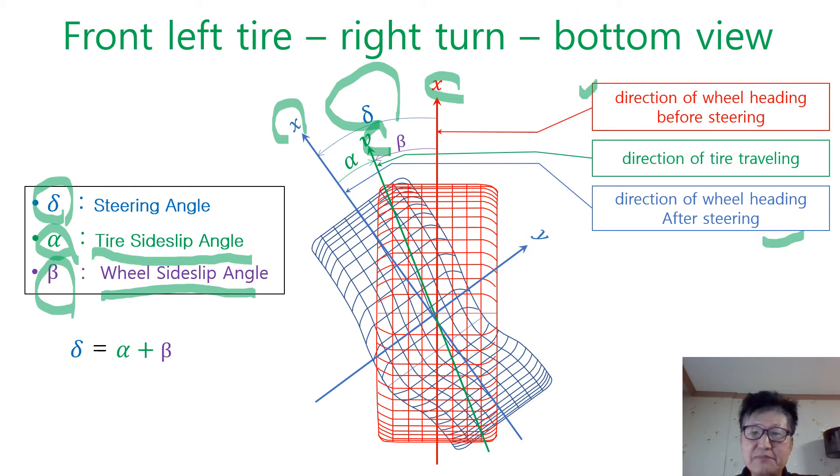When you steer the vehicle with angle delta on the curved road, wheel limb is pointing positive X axis here. But wheel and tire assembly don't move in that positive X axis, but in the direction of V here, marked in green color in the picture.